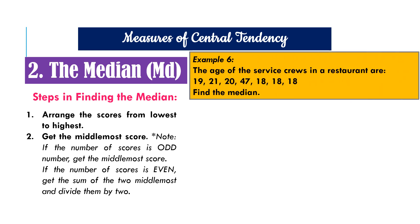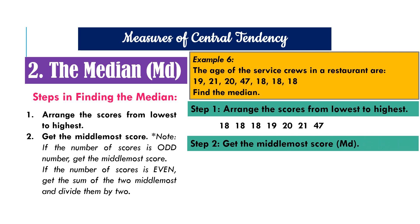Example six. The age of the service crews in a restaurant are as follows. We have to find the median. Again, for step one, we arrange the scores from lowest to highest. And here is the result. We have 18, 18, 18, 19, 20, 21, 47. Step two, we get the middlemost score or number. And it is 19. It means that the median of the data given is 19.